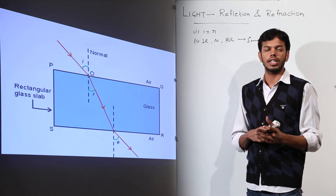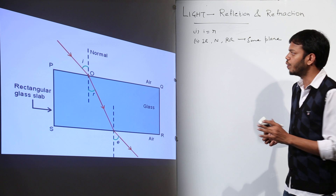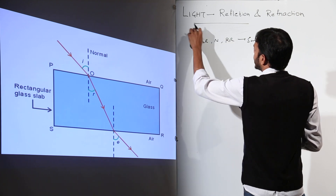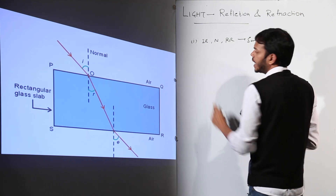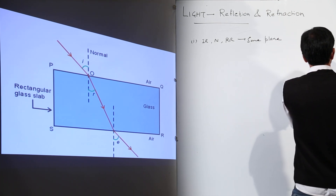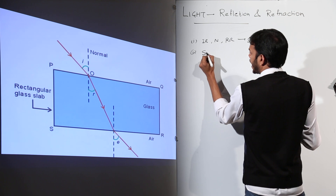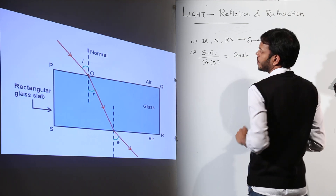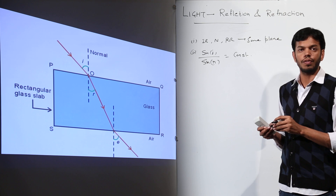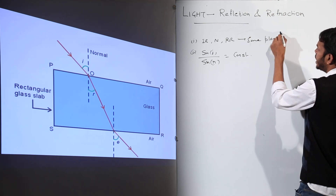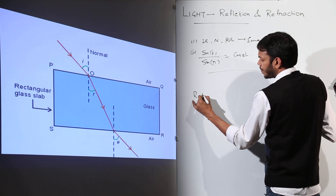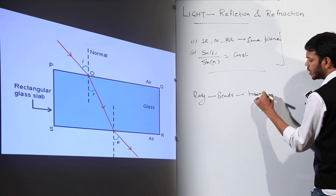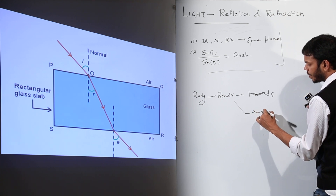Similarly, there are laws of refraction that govern this phenomenon. The first law states that the incident ray, normal, and the refracted ray all lie in the same plane. The second law states that the ratio of the sine of the angle of incidence to the sine of the angle of refraction is a constant.